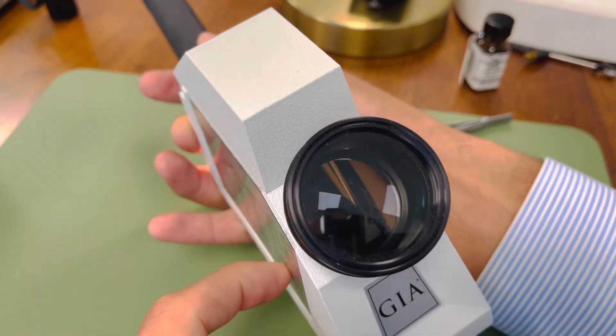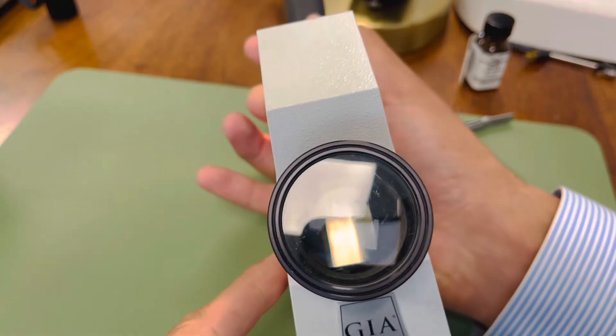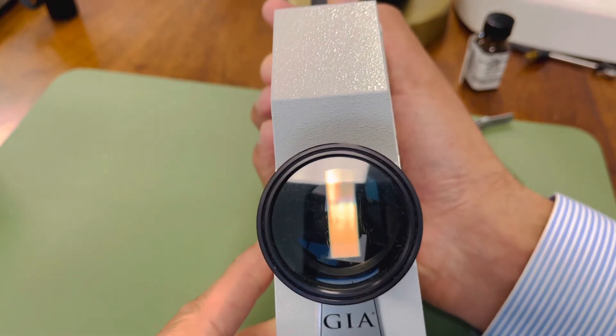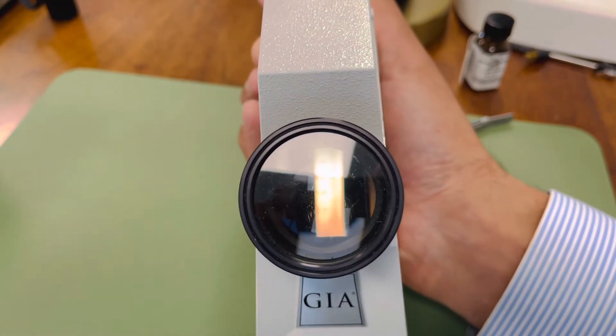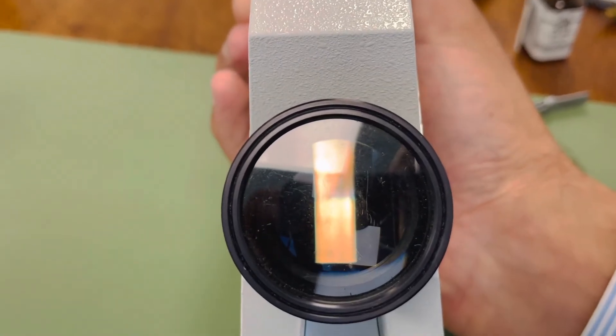Now I chose just a white light source. Monochromatic light is also used in some cases where you want to refine your readings. But this is good enough for now.